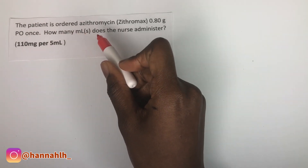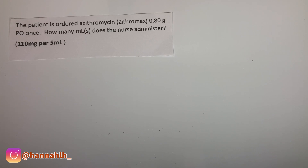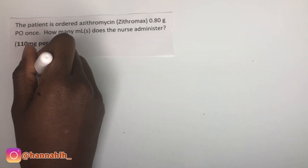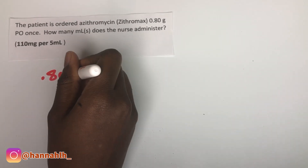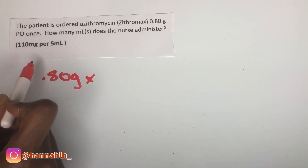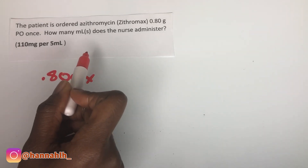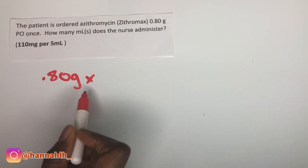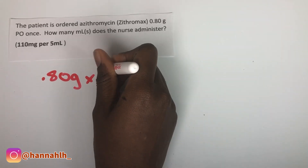The patient is ordered azithromycin 0.80 grams by mouth once. PO means by mouth. How many milliliters does the nurse administer? The available concentration is 110 milligrams per 5 milliliters — meaning in every 5 milliliters of the solution, there is 110 milligrams of azithromycin. You need to convert grams to milligrams because the medication is labeled in milligrams. One gram is equal to 1000 milligrams.